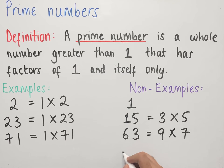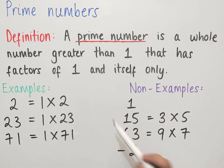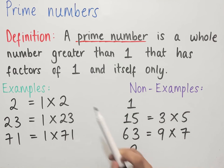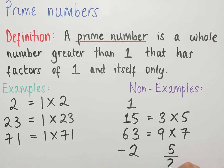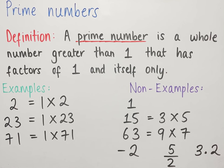Another example: the number minus 2 is not a prime number since, while minus 2 is a whole number, the number needs to be greater than 1 and minus 2 is not greater than 1. We also have 5 over 2 — that's not a prime number since the number has to be a whole number, and 5/2 is not a whole number. Similarly, 3.2 is not a prime number since 3.2 is not a whole number, and so on.